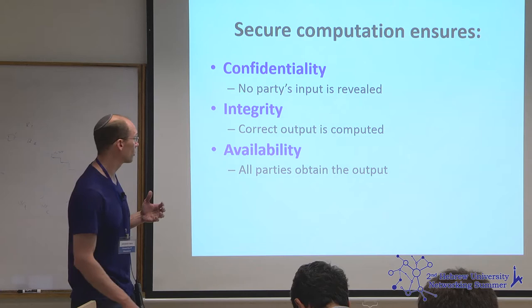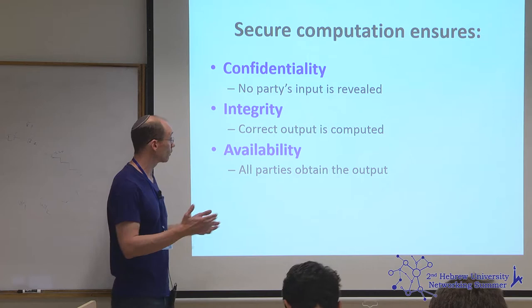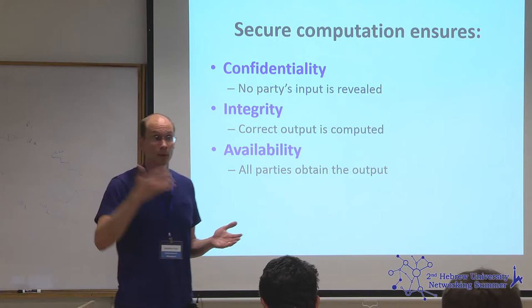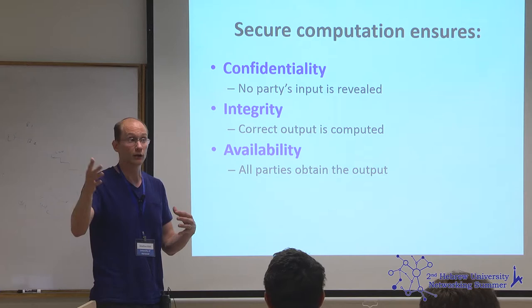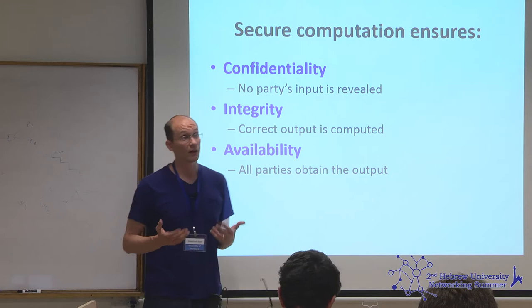To summarize: a secure computation protocol guarantees confidentiality — nothing about any party's input is revealed beyond what's implied by the result of the computation. It guarantees correctness: honest parties get a correct output consistent with some input. And in a multi-party protocol, whatever input the attacker gives, every honest party is guaranteed to get the same output. You also get availability depending on the setting — namely that the attacker can't carry out a denial of service and prevent honest parties from getting the output at all.